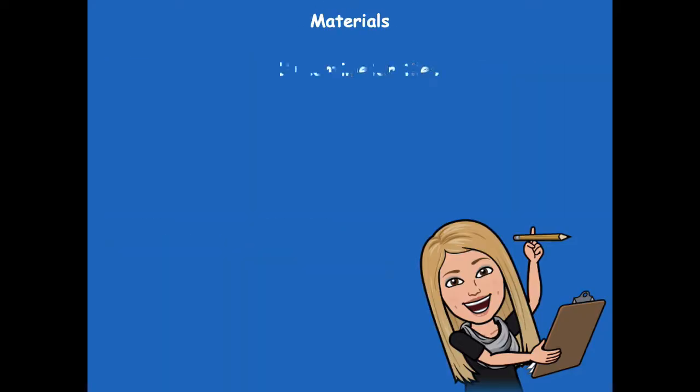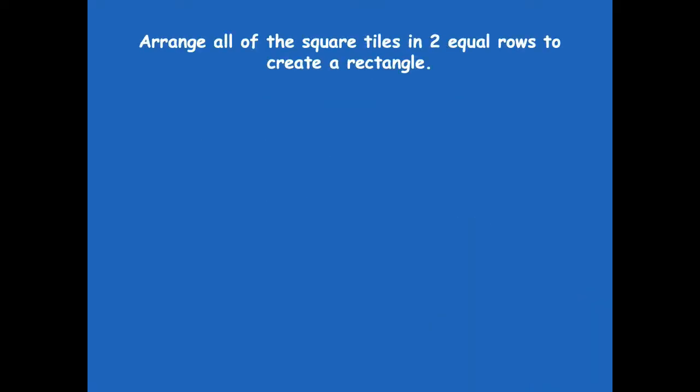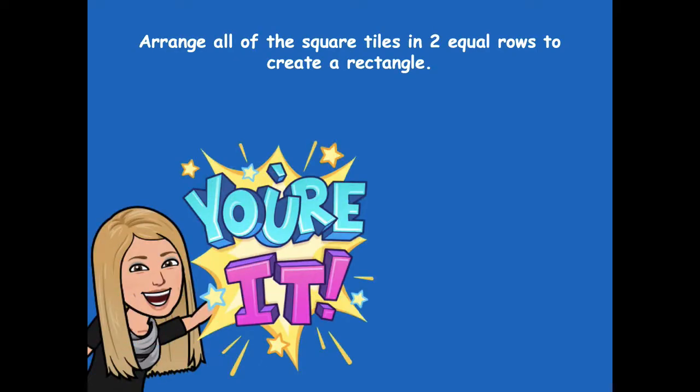Alright friends, for the first problem you're going to need 10 centimeter tiles — the small little centimeter cubes. You're going to arrange all of those square tiles in two equal rows to create a rectangle. Take all 10 of those tiles and create them in two equal rows to make a rectangle. Go ahead and pause the video, then click play once you've done that and you're ready for the next step.